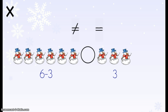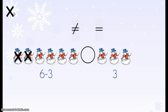Now let's try some using subtraction. On this side, I have 6 minus 3. I have 6 snowmen — 1, 2, 3, 4, 5, 6. The minus tells me I need to take away 3 snowmen: 1, 2, 3. After I take away 3 snowmen, I'm left with 1, 2, 3 snowmen. Now I have 3 snowmen on one side, and on the other side I also have 1, 2, 3 snowmen. That means 6 minus 3 and the number 3 are the same, so I can put an equal sign. 6 minus 3 equals 3.